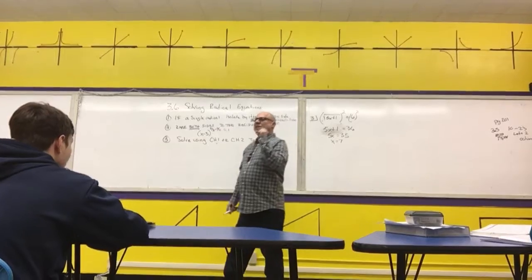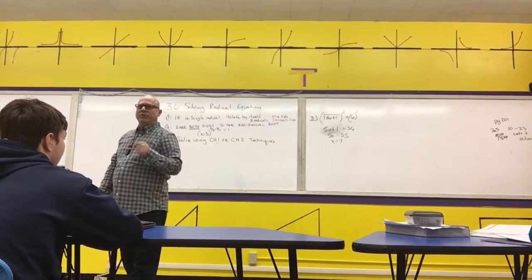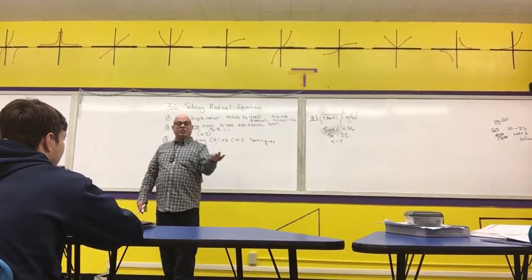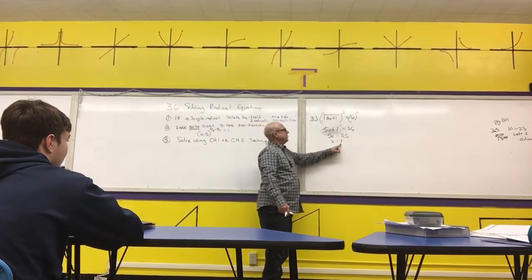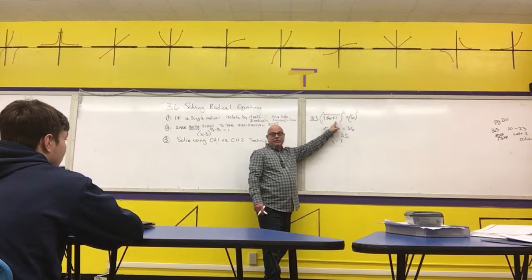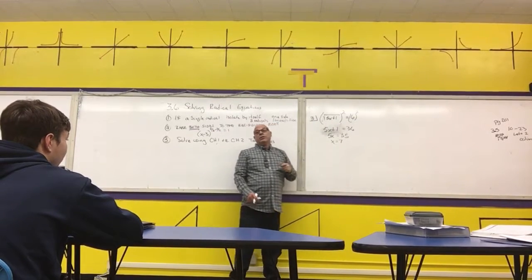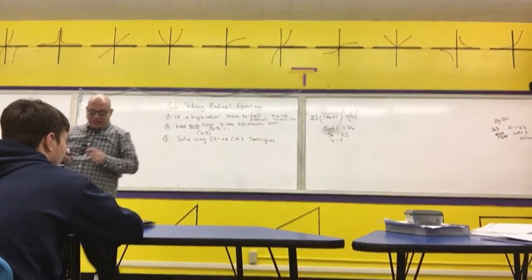However, if you have an even root, you must go back and check to make sure you're not going to be taking the square root of a negative number. There are going to be times you're going to end up with more than one solution. You need to cross off the solutions that don't make sense. Put the 7 in here. 35 plus 1 is 36. Is that positive? Is it greater than or equal to 0? Then we're good. Any questions on that one?